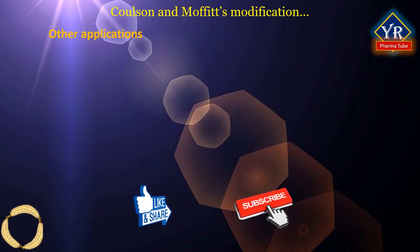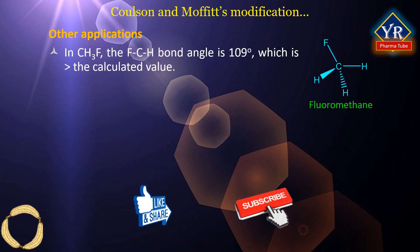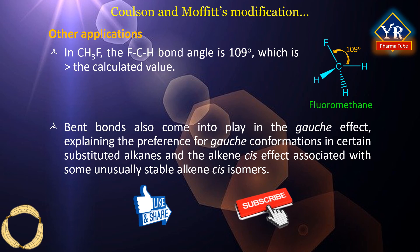Other Applications: The bent bond theory, or Coulson and Moffitt's modification theory, can also explain other phenomena in organic molecules. In fluoromethane, for instance, the experimental fluorine-carbon-hydrogen bond angle is 109 degrees, which is greater than the calculated value. This is because, according to Bent's rule, the carbon-fluorine bond gains P-orbital character, leading to high S character in the carbon-hydrogen bonds and hydrogen-carbon-hydrogen bond angles approaching those of SP2 orbitals — that is 120 degrees — leaving less for the fluorine-carbon-hydrogen bond angle. The difference is explained in terms of bent bonds. Bent bonds also come into play in the gauche effect, explaining the preference for gauche conformations in certain substituted alkanes and the unusual stability of some alkene cis-isomers.